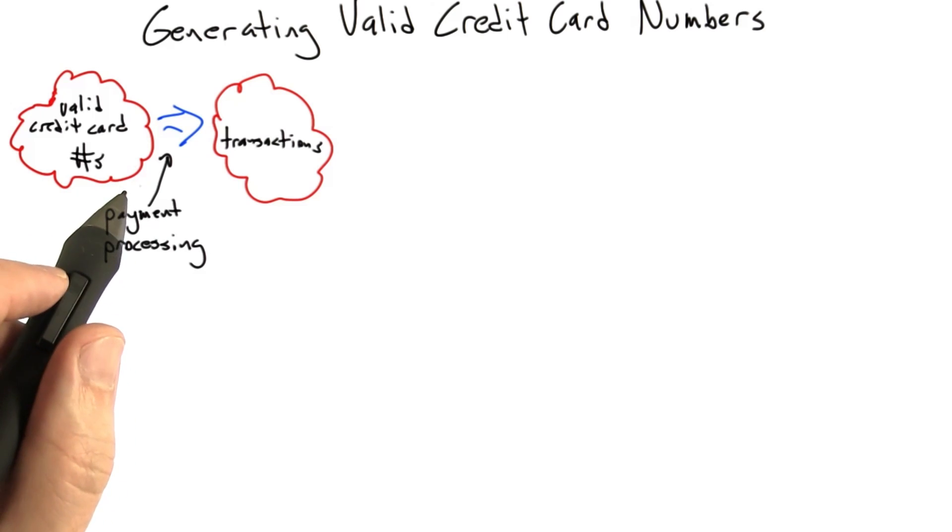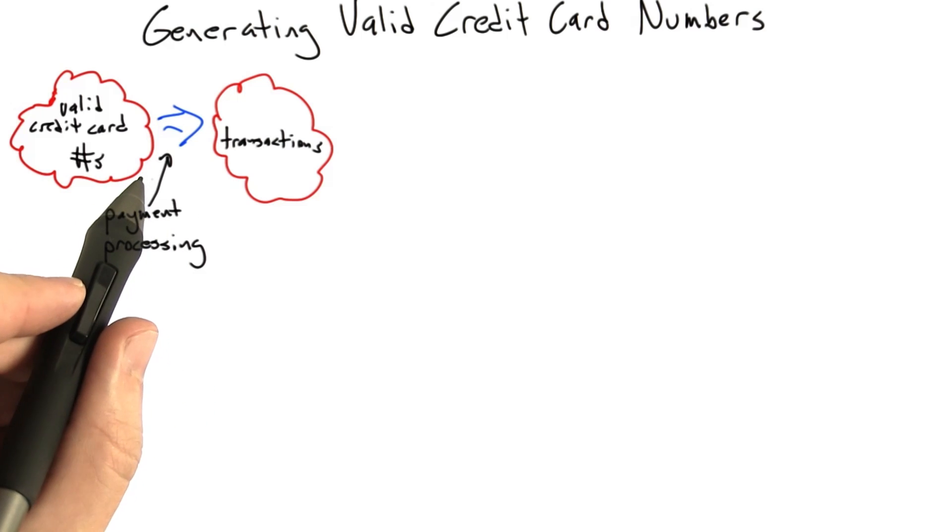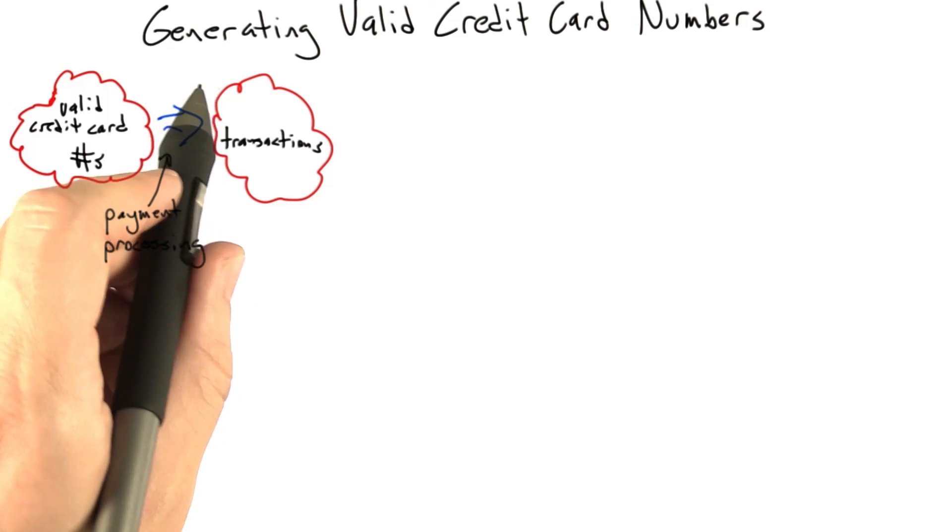So what we're going to want to do is randomly generate valid credit card numbers and use that to test the payment processing system. And so to get any farther here, what we're going to have to do is take a look at the structure of a credit card number.